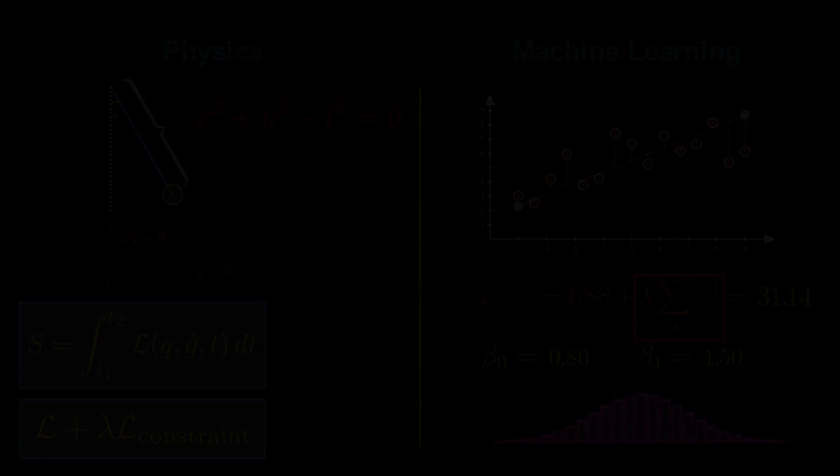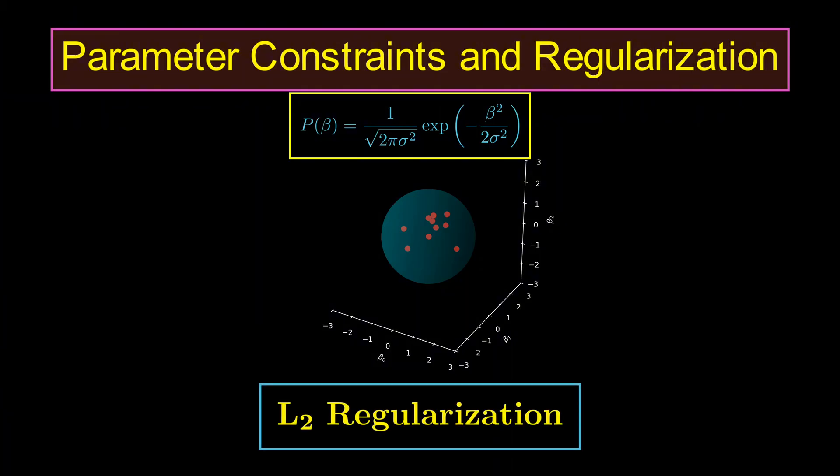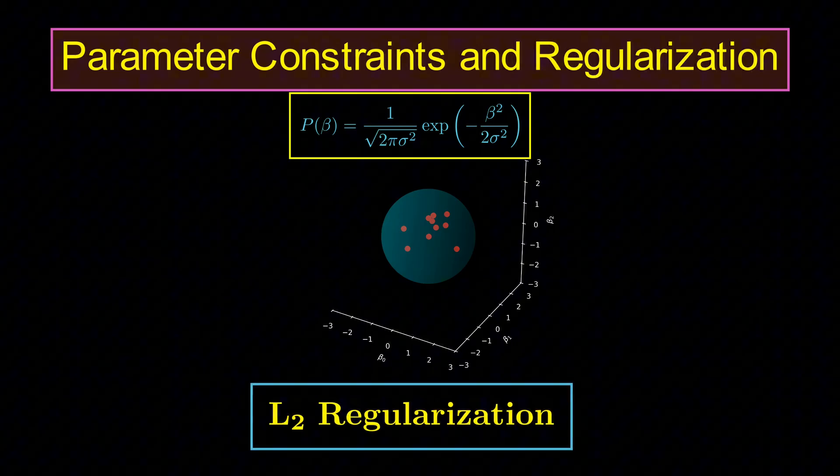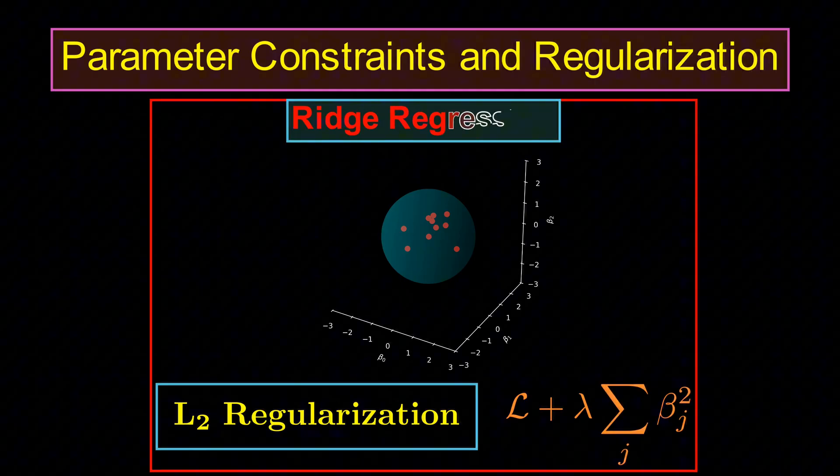When the probability of the parameters is assumed to be Gaussian, parameters are constrained to lie within a sphere in parameter space. In machine learning, this is referred to as the L2 regularization. When this constraint is added to a linear regression, we refer to it as the ridge regression.